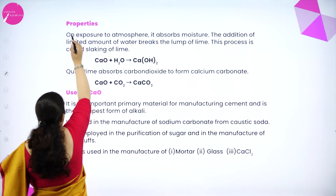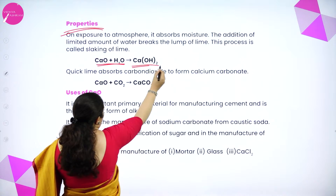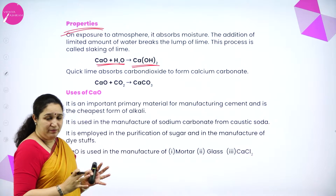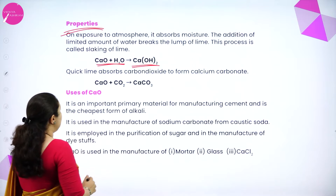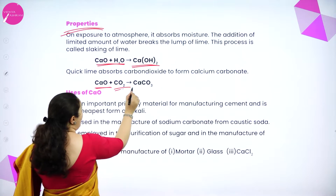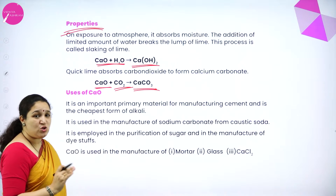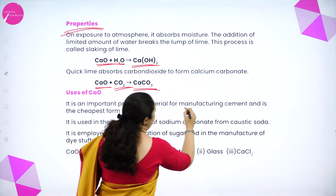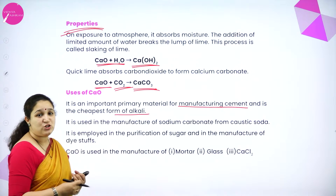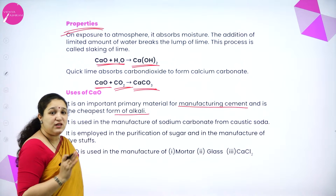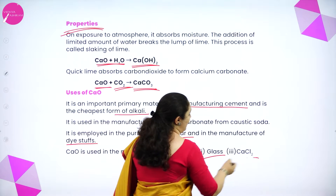Properties of quick lime: on exposure to air, quick lime absorbs moisture and forms slaked lime — this process is called slaking of lime. Calcium oxide can also absorb carbon dioxide to form calcium carbonate. Its uses include being a primary material for manufacture of cement, the cheapest form of alkali, and it is used in manufacture of sodium carbonate from caustic soda, purification of sugar, manufacture of dyestuffs, mortar, glass, and calcium chloride.